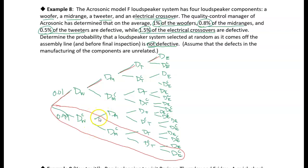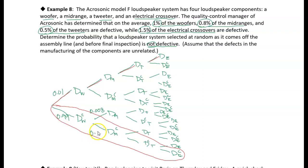For the mid-range, we have a 0.8% chance of being defective, which as a decimal is 0.008. I'm more interested in the probability of not getting a defective mid-range, so that's 0.992. I could fill in all remaining branch probabilities, but I only need the branch I circled.